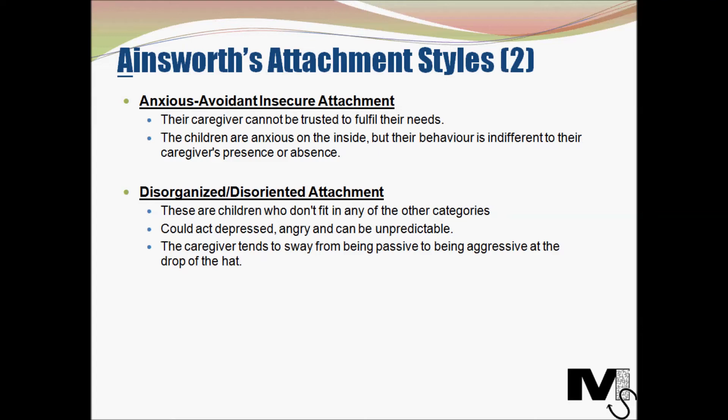The next type is disorganized or disoriented attachment. Children who don't fit into any of the other categories are generally categorized as disorganized or disoriented. These children could act depressed, they can act angry and can almost always be unpredictable. They can sometimes be angry specifically in the presence of the caregiver, which is quite disturbing. The caregiver in this case could have the tendency of swaying between being passive to being aggressive at the drop of a hat, which results in a very disoriented attachment for the child.